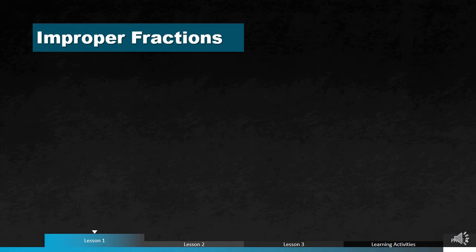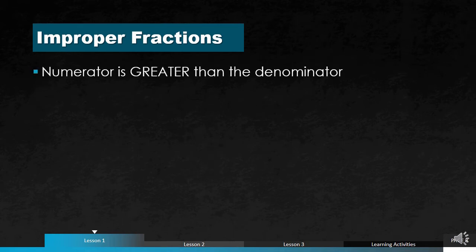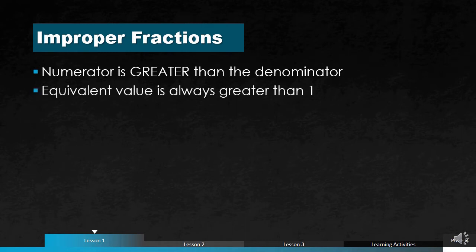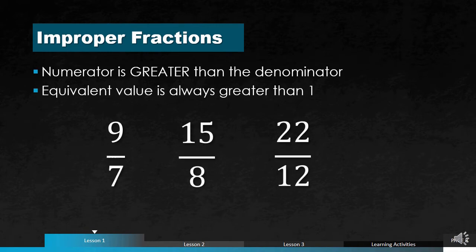For improper fractions, the numerator is always greater than the denominator, so the equivalent value is always greater than 1 — the number on top is bigger than the number on the bottom. Some examples: 9 over 7, 15 over 8, and 22 over 12.